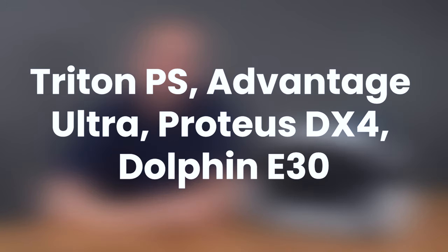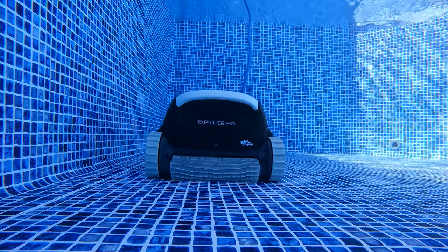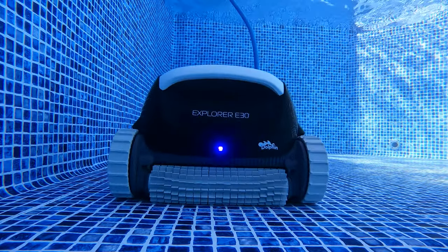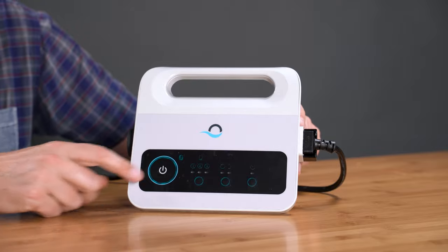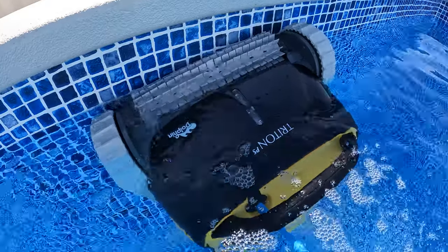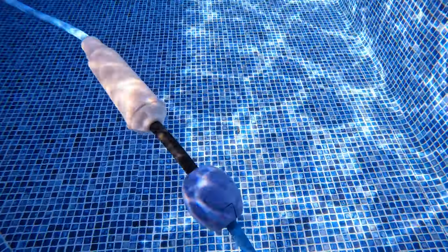Diving into the next set: the Triton PS, Advantage Ultra, Proteus DX4, and Dolphin E30. All of these units fall into the same category, as they have the exact matching features and specs. These robots can clean pools up to 40 feet from the floor to the waterline. They include the standard fine filter basket, a programmable power supply, a two-hour cleaning cycle, an anti-tangle swivel, and a two-year warranty.